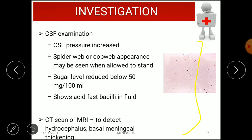Investigations for tuberculous meningitis include CSF examination, which shows increased CSF pressure, cobweb or spider web appearance when allowed to stand, reduced sugar below 50 mg per 100 ml, and acid-fast bacilli in the fluid. CT scan or MRI is used to detect hydrocephalus and basal meningeal thickening.